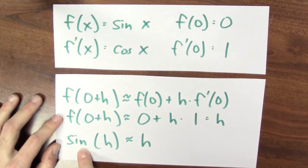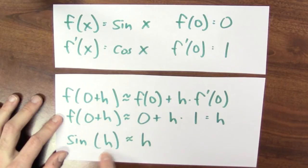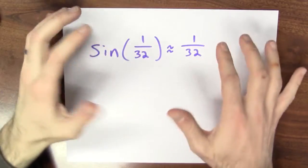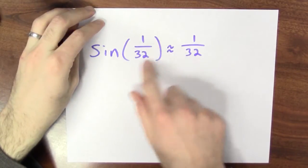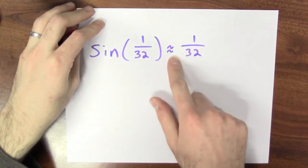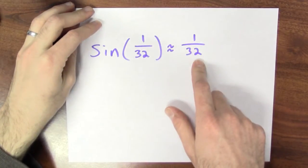That means sine of a very small angle is very close to that same value. Let's actually use some numbers. Very concretely, sine of 1/32 is really close to 1/32.